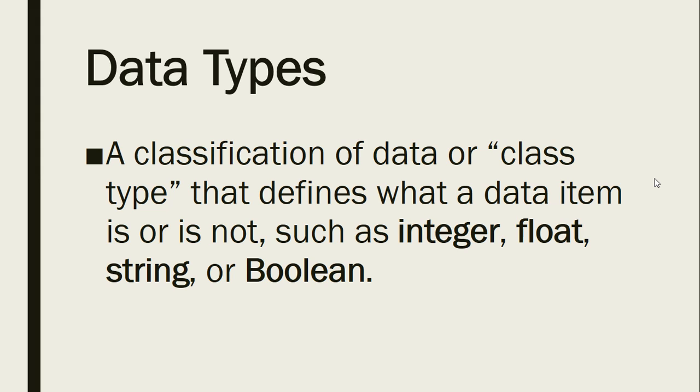So regardless of what type of variable, whether it's global or local, there are four types of data, data types that can go into or be a variable, and those are integer, float, string, or Boolean. All right, so we're gonna take a look at each one of these.